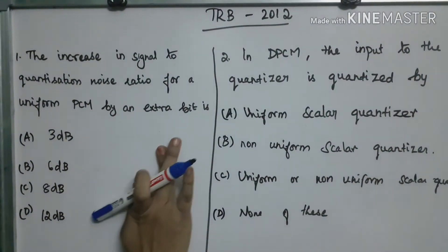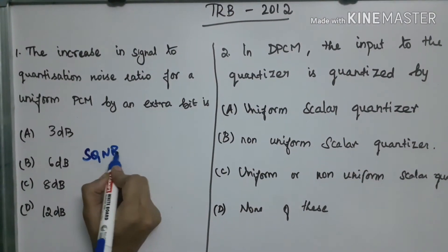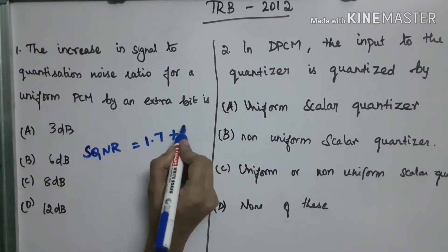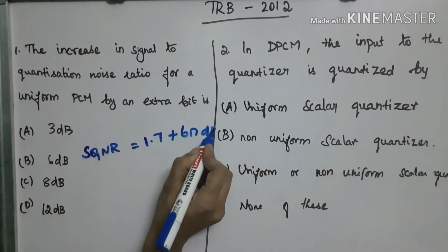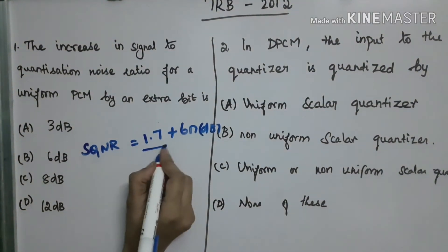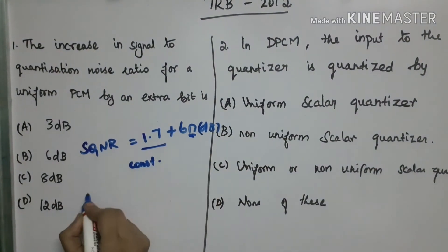The formula for this question is signal to quantization noise ratio SQNR is equal to 1.7 plus 6N in dB. This is the formula here. See this is our constant term. N is the number of bits.